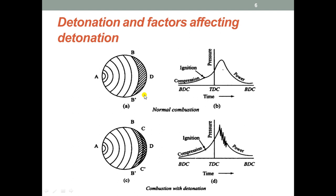The pressure or vibration frequency in an SI engine during detonation can be up to 5000 cycles per second. Detonation is undesirable as it affects engine performance and life, as it abruptly releases a sudden large amount of heat energy. It also puts a limit on the compression ratio at which the engine can be operated, which directly affects engine efficiency and output. By referring to the figure, we are going to define the phenomena of knock.